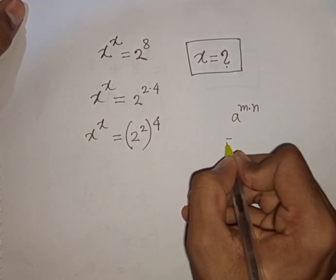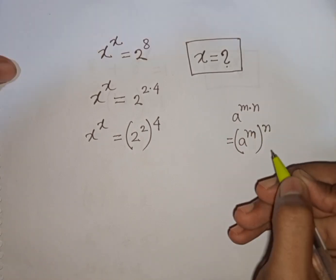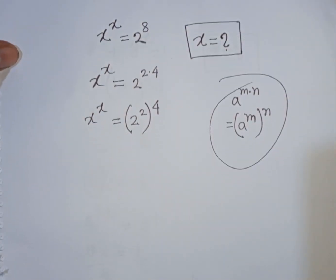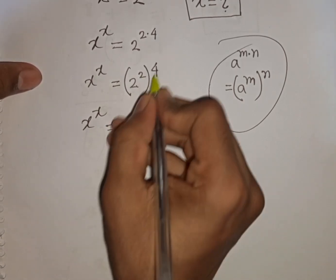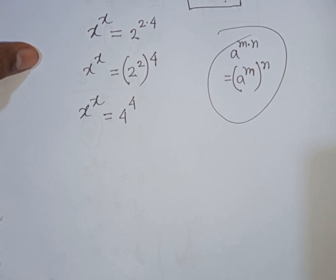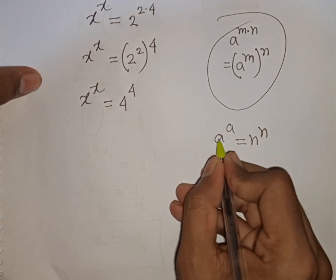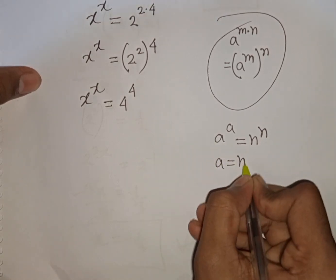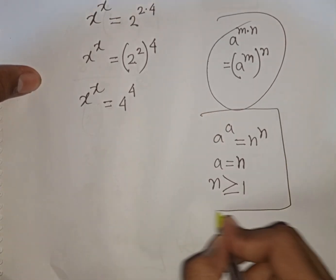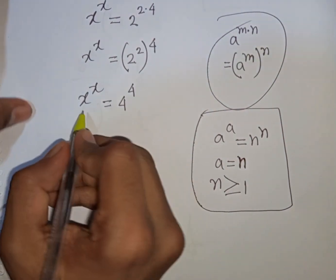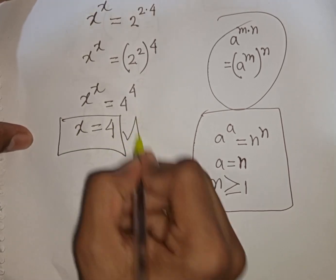According to the rule, a power of m times n is equal to a power m, bracket power n. So x power x is equal to 2 power 2, which is 4, then power of 4 — so it becomes 4 power 4. Now applying the rule that a power a equals n power n means a equals n, where n is greater than or equal to 1. Comparing both sides, x is equal to 4. This is our final answer.